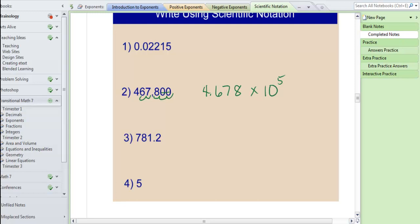I'm going to skip down to number 4 now. Now 5 is the same thing as 5.0. So technically this is already written in scientific notation. So this is actually 5 times 10 to the zero power because we know that anything to the zero power is what? It's 1.